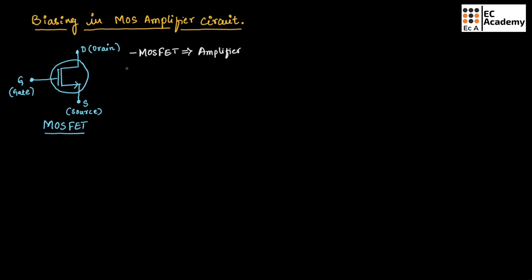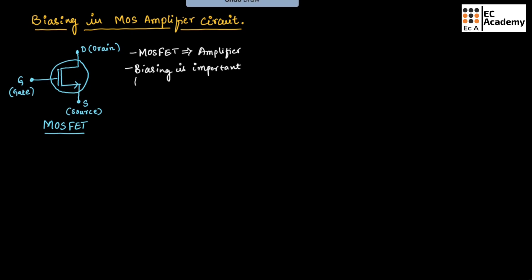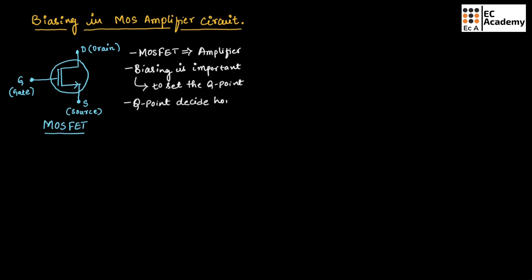Biasing is very important for any amplifier. Biasing is used to set the Q point, and this Q point will decide how MOSFET will work as an amplifier.